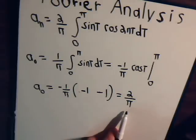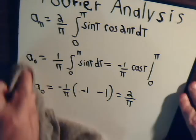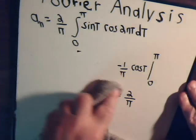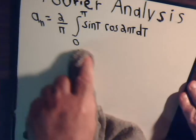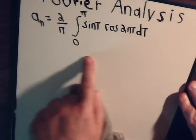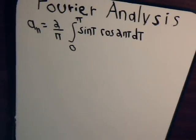So there's our expression for a sub 0. Now we have to figure out how we're going to determine a sub n. Here we have one function times another function, and thinking of some basic trig identities can help us out.